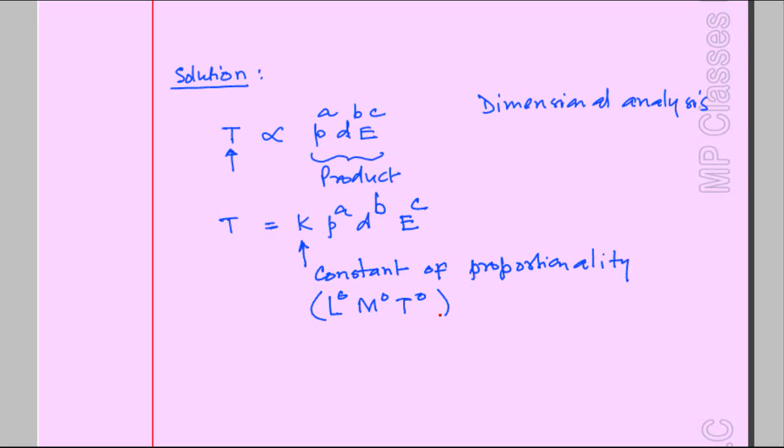We will have to find dimensions for pressure using formula force over area or some other formula, D density which is mass over volume, and energy which is nothing but work, which is force times distance FD. Can we use this to get the dimensions? Let's do that.